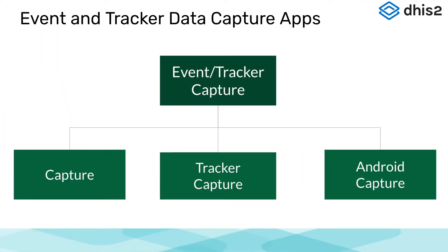There are three main data entry apps used when entering event and tracker data. This includes the Capture app, which is used for event data, and Tracker Capture, which is used for tracker data. Both of these apps are the web versions you would use on a computer. There is also the Android Capture app, which allows you to collect aggregate, event, and tracker data all within the same app on an Android device.